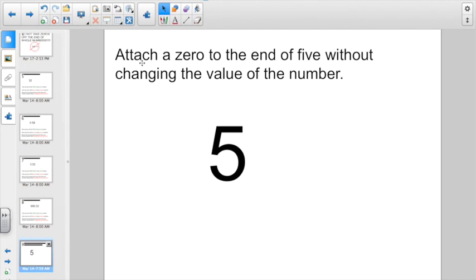Here it says, attach a zero to the end of 5 without changing the value of the number. Now, if I just went and put in a zero here, that's actually going to change my value, isn't it? Because 5 is going to become 50. How am I going to do this without changing the value? Put in a decimal point. 5 and 0 tenths would be the same thing as 5, right?